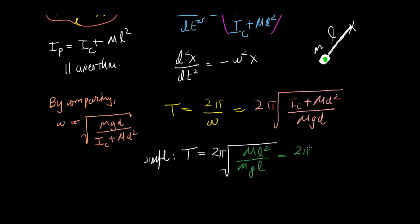So this comes out to be 2 pi times the square root of, we lose our m, we lose our l, so we get 2 pi under root l over g, which is exactly what we got in the previous video.